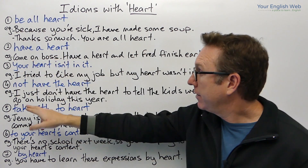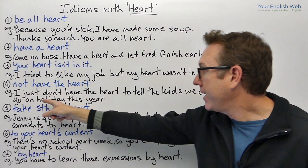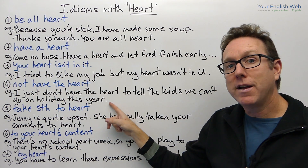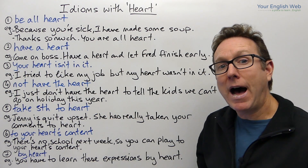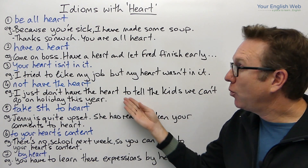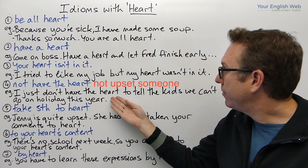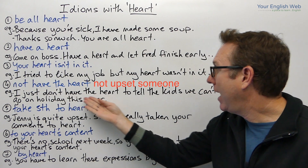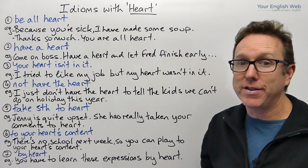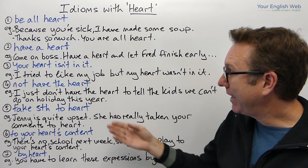The fourth idiom is 'to not have the heart to do something.' Unlike 'have a heart,' this is about not wanting to cause sadness. Example: 'I just don't have the heart to tell the kids we can't go on holiday this year.' It means we don't want to hurt their feelings — we don't want the children to be upset or feel sad. I don't have the heart to tell them.